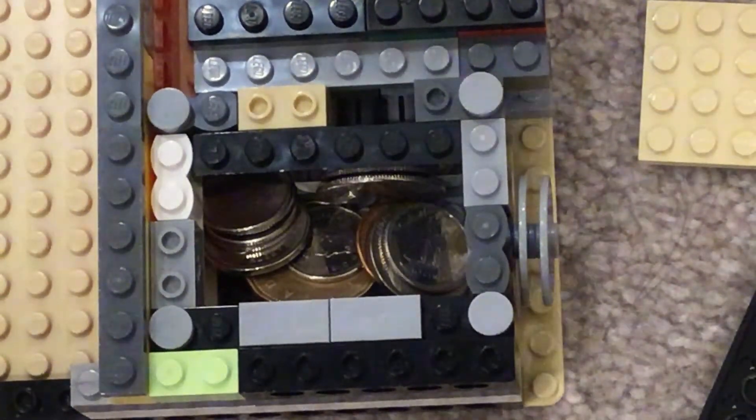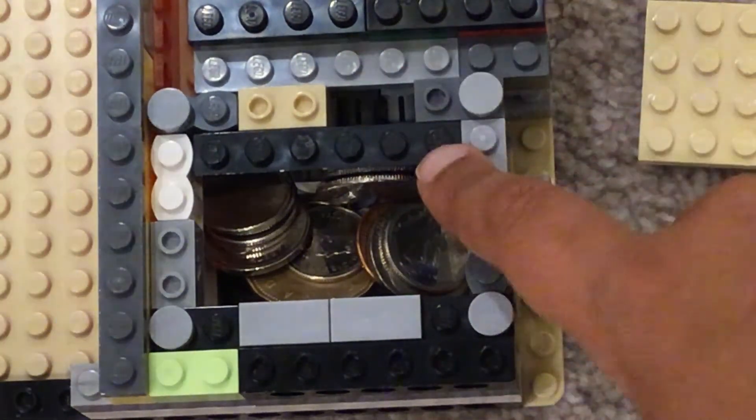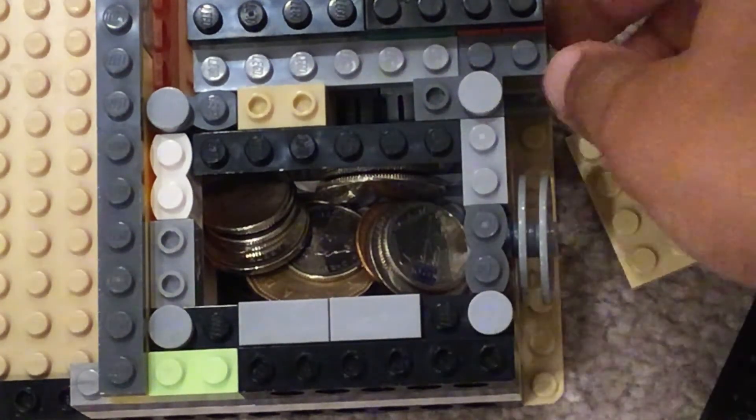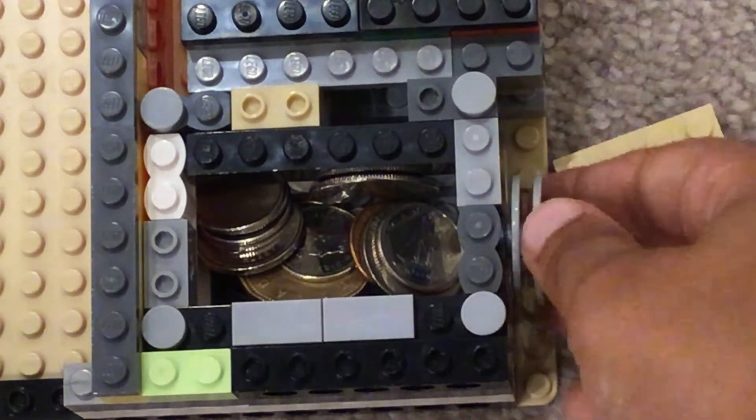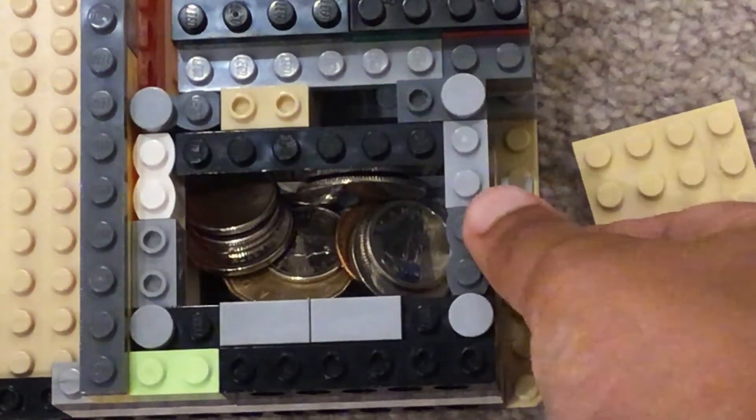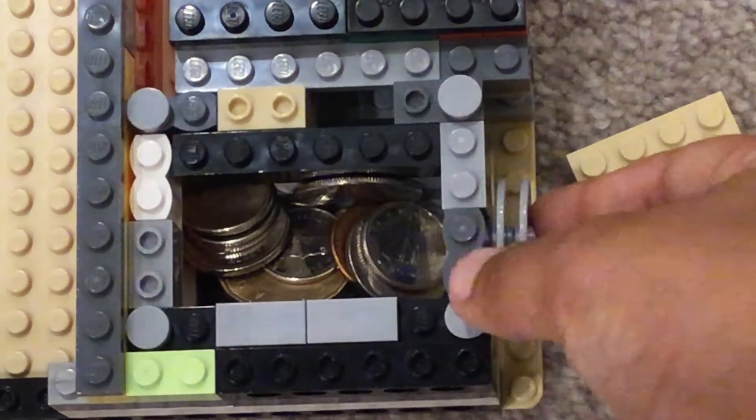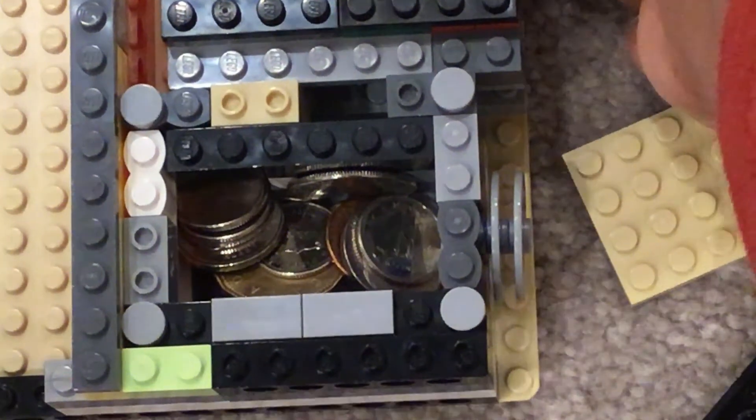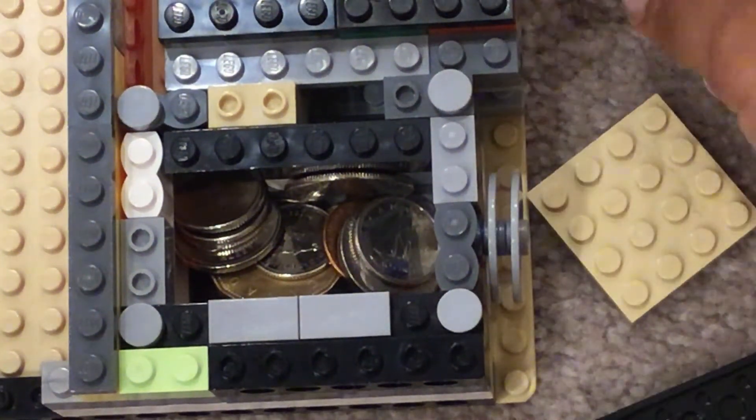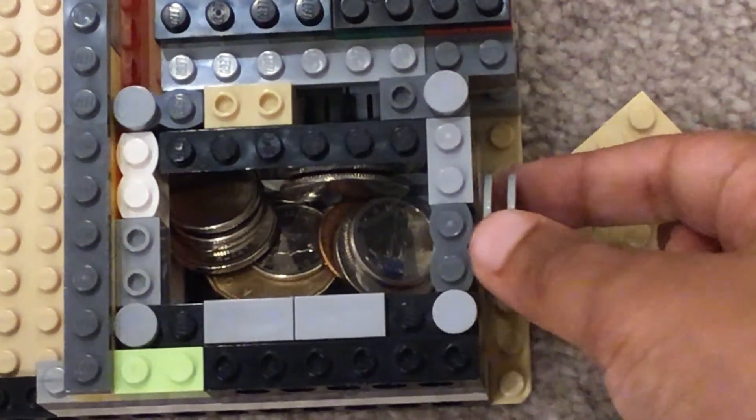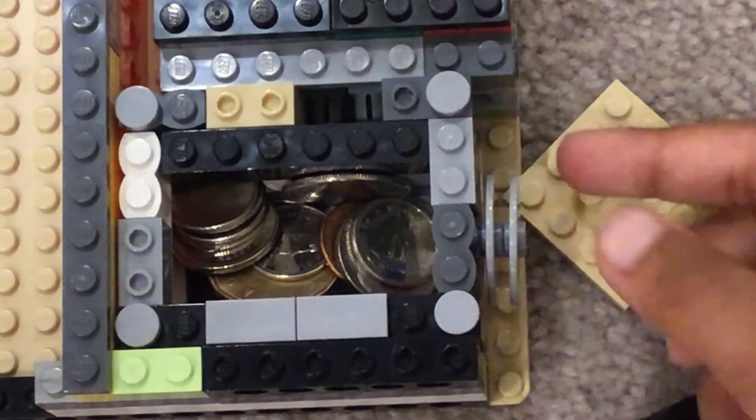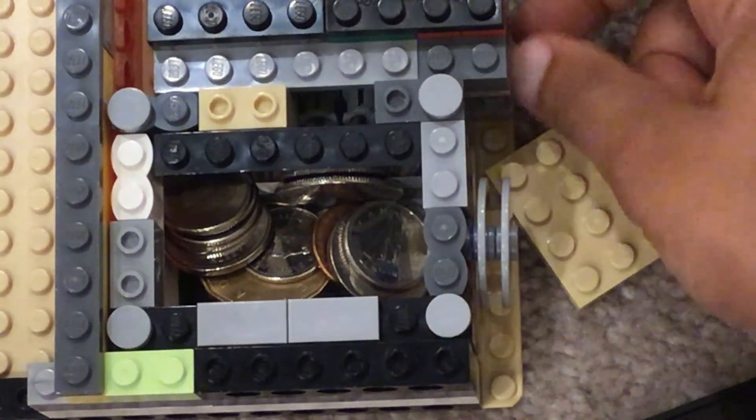There are these two little thingies down here. When I insert the key, these things move and then that leaves the box free. Now when those thingies retract, the things are back, the box does not move.